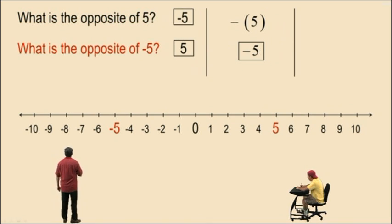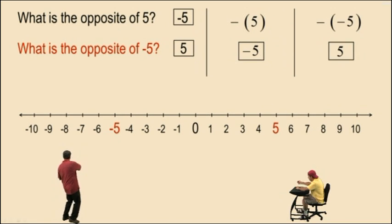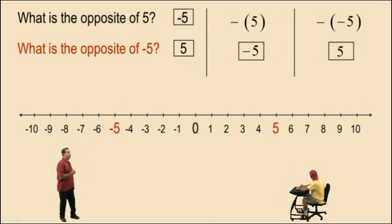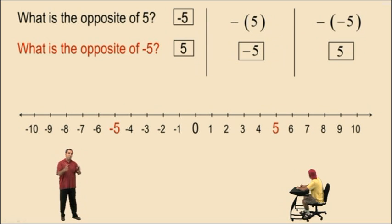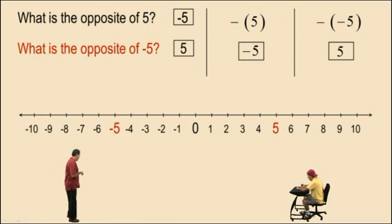Now, what is the opposite of negative 5? Let's put our opposite symbol and put negative 5 in parentheses. The opposite of negative 5 is positive 5 — opposites of negative numbers are always going to be positive. If we treat that opposite sign as negative 1, then negative 1 times negative 5 is positive 5. This is the reason why a negative times a negative is positive. You can always look at opposites as multiplying by negative 1.